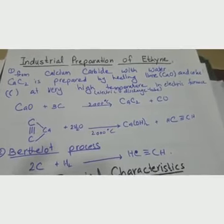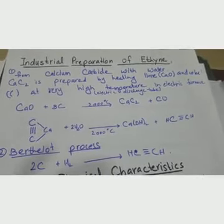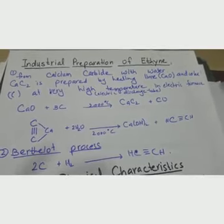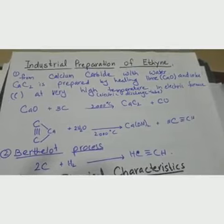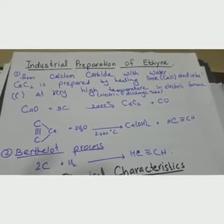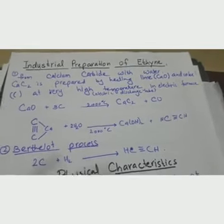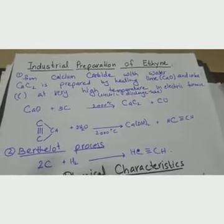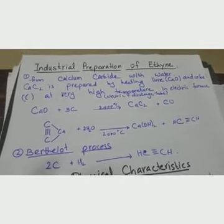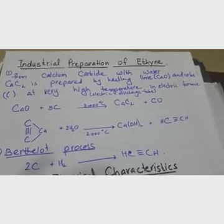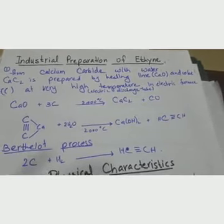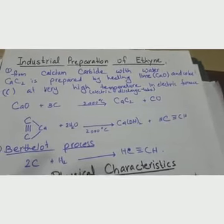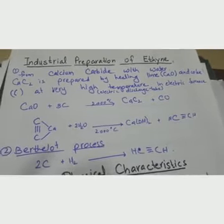This process is dehydrohalogenation — hydrogen and halogen atoms are removed from two adjacent carbons. This is the method for preparing alkynes, including ethyne, in the lab. This general method can be used for all alkynes.